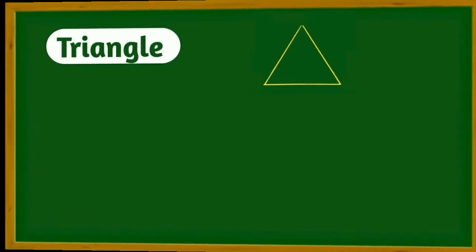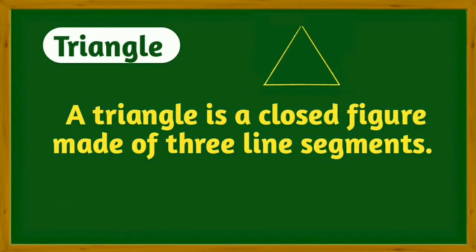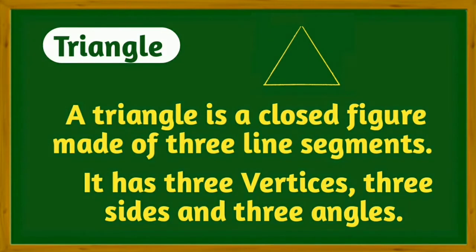Now what is a triangle? A triangle is a closed figure made of three line segments. It has three vertices, three sides, and three angles.